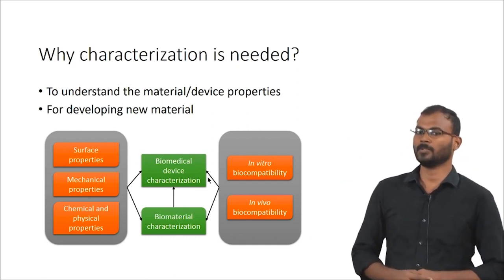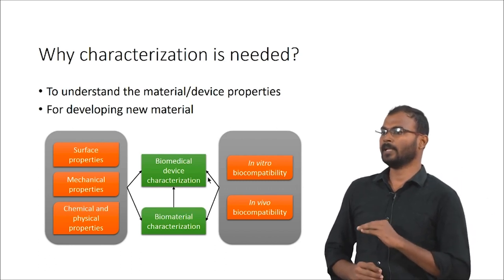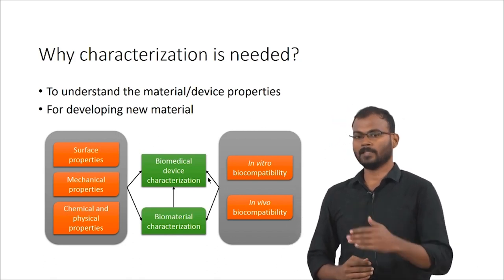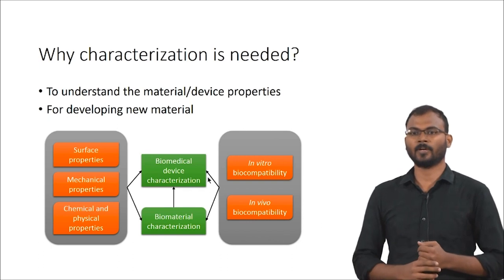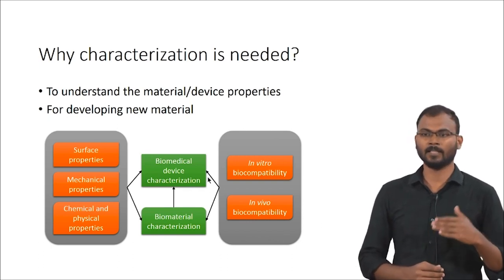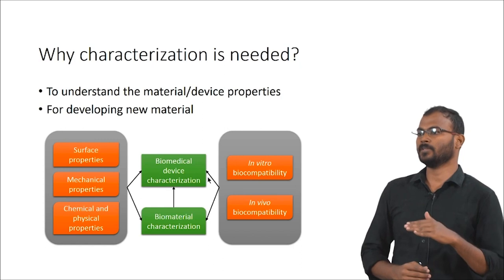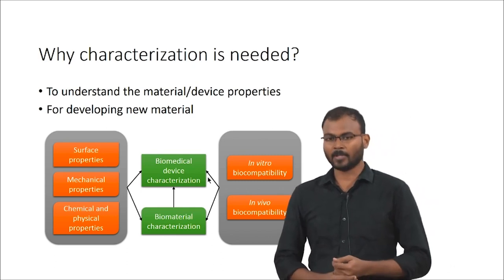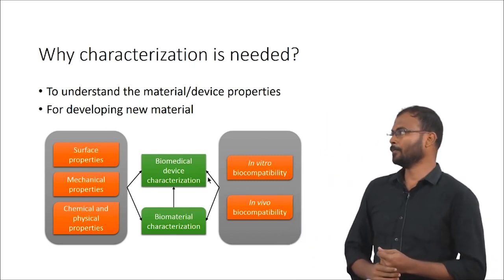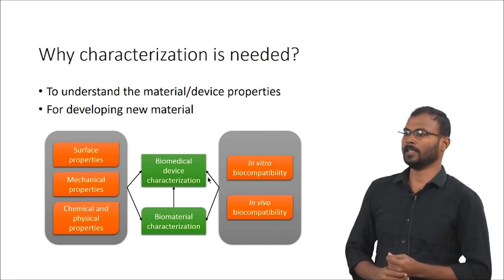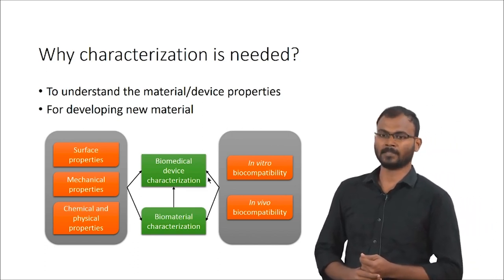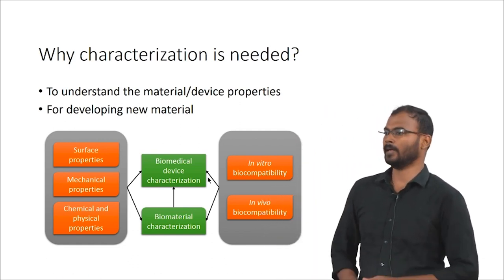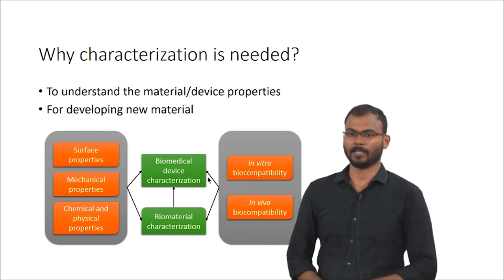Surface property is primarily dependent on the material and host cell interaction at interfaces. When a material is implanted into the body, the first point of contact is the material surface and the host cells. The surface should be biocompatible so that it would not be rejected by the host mechanism. For mechanical properties, when considering implants such as hip prostheses and other heavy load-bearing applications, you need a good mechanical property.